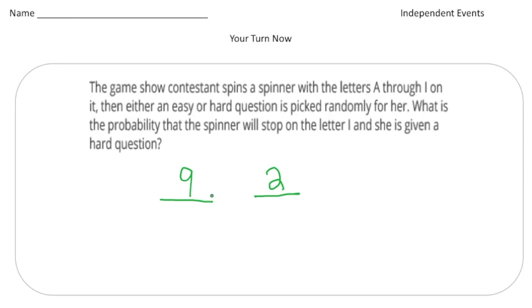So the probability of getting the letter I and then given a hard question, well, there's a one in nine chance of getting the letter I. And then there's a one in two chance of getting the hard question. And the way you get the probability is you multiply.